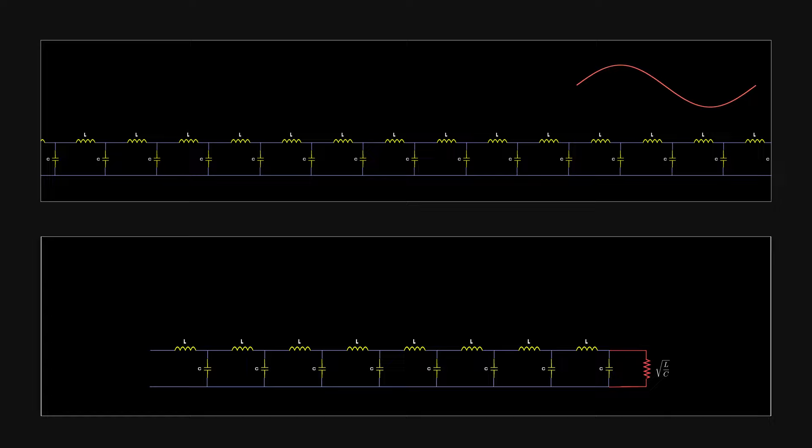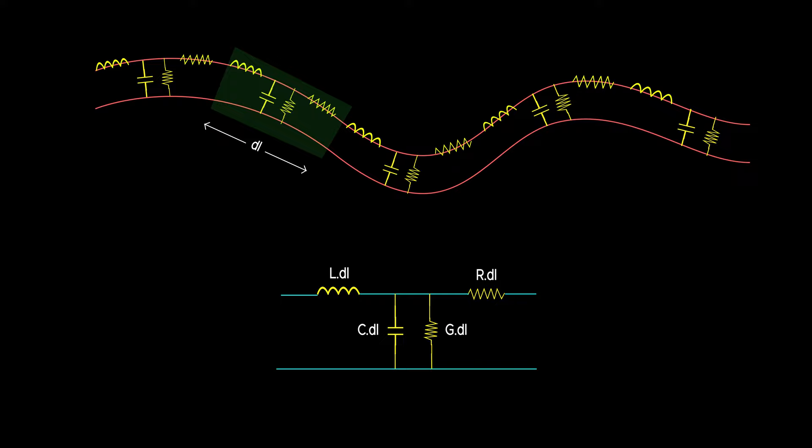So far so good. But how does the injected signal itself propagate through the line? Now to answer that question, let's analyze one section from the line. Even at very high frequencies, the signal wavelength would be very large compared to the section dimensions. Hence, the lumped element model is valid and Kirchhoff's laws can be applied at each section.